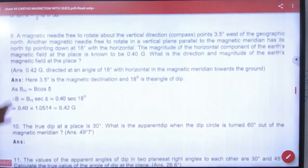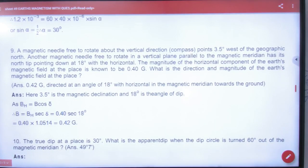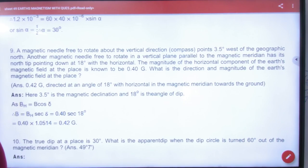Question number 9. A magnetic needle free to rotate about vertical direction points 3.5 degrees west of geographic north. Another magnetic needle free to rotate in a vertical plane parallel to the magnetic meridian has its north tip pointing down at 18 degrees with horizontal.